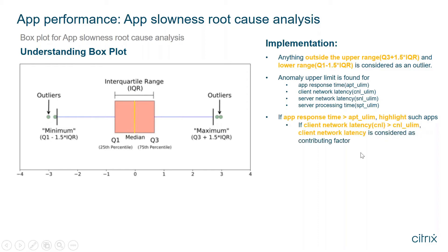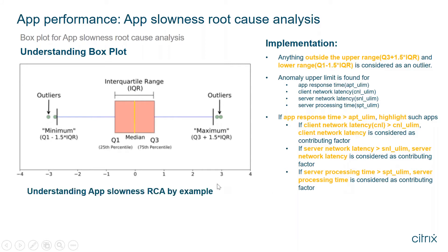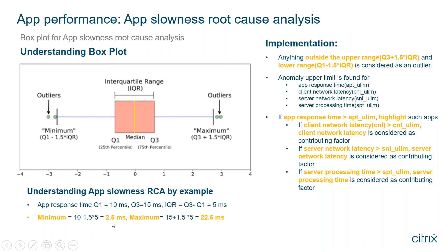When an application's response time is higher than its upper limit, we highlight it. Then we debug: if client network latency exceeds its upper limit, that becomes the contributing factor; similarly for server network latency and server processing time. For example: if Q1 = 10ms, Q3 = 15ms, IQR = 5ms, then minimum = 2.5ms and maximum = 22.5ms. An app response time of 25ms falls outside the maximum, classifying it as an outlier.